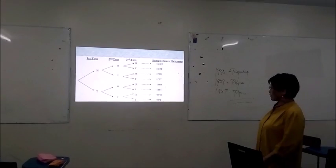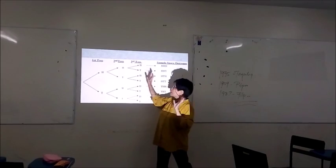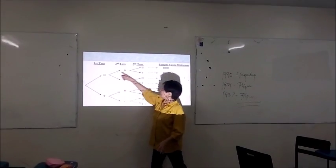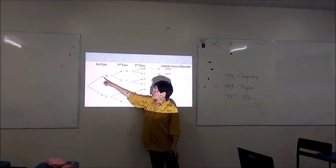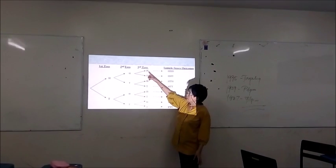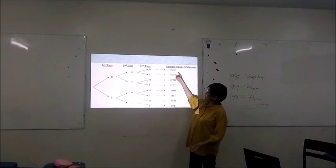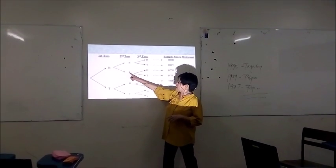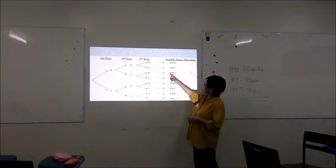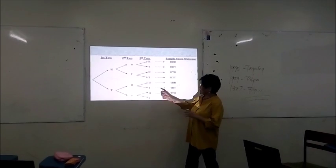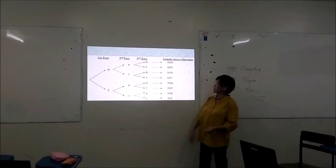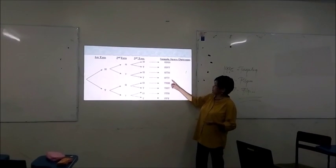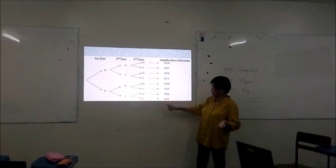Here is our tree diagram. We are tossing the coin three times: here is the first toss, the second toss, and the third toss. We put together all the possible outcomes. If in the first toss you had a head, second toss a head, and third toss a head, that outcome is HHH. If you get a tail in the second toss and then a head, that is HTH, and so on. Listing them all, we have: HHH, HHT, HTH, HTT, THH, THT, TTH, and TTT.